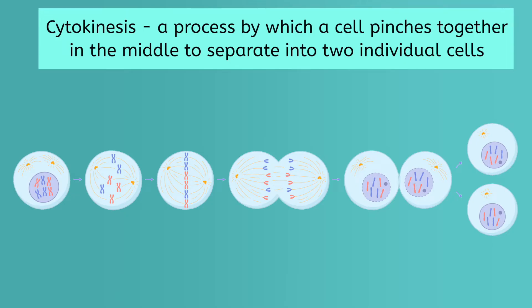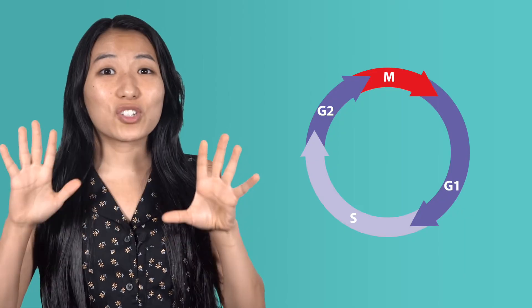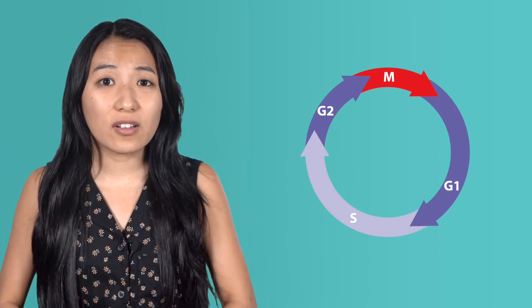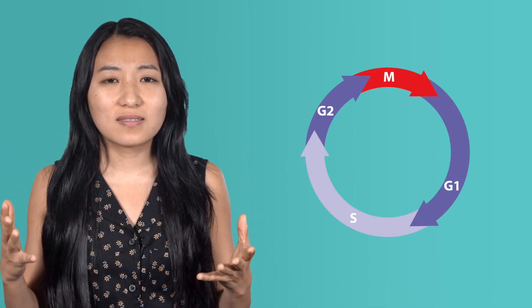All of this typically happens in roughly two hours. From start to finish, most cells in your body complete the entire cell cycle in about 24 hours. So in just one day, we've made two new cells out of an existing one. Now what?